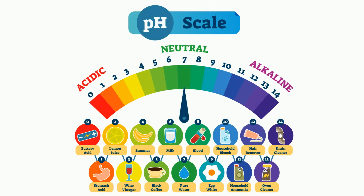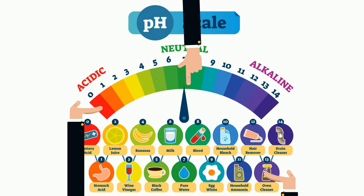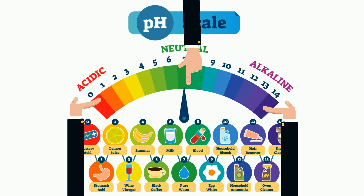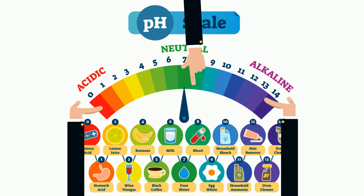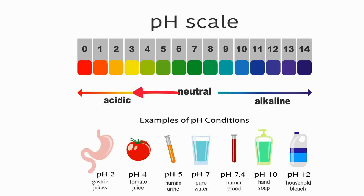pH is organized into a scale of acids and bases with neutral right in the middle. The range goes from 0 to 14 with 7 being neutral. pHs of less than 7 indicate an acid, where a pH greater than 7 is a base.